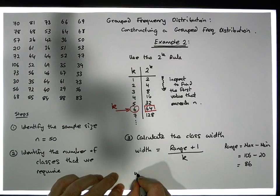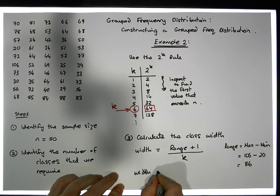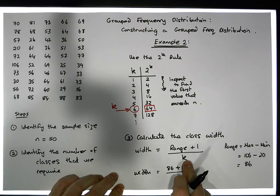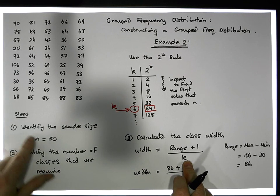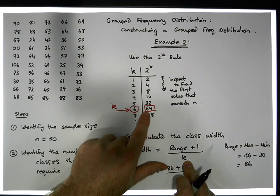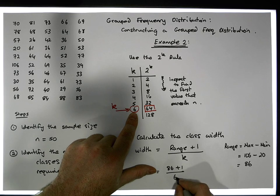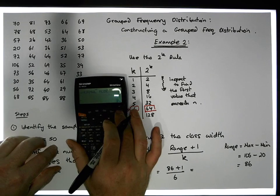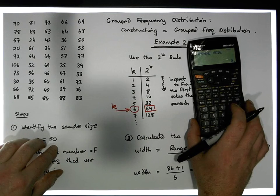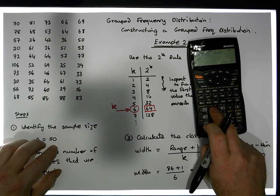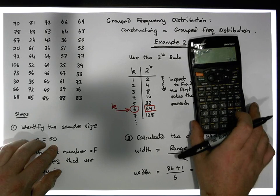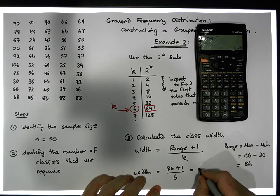So the width is equal to the range, which is 86, plus 1, divided by the number of classes, which is 6. That gives us 87 divided by 6. Using the calculator, that gives us a value of 14.5.